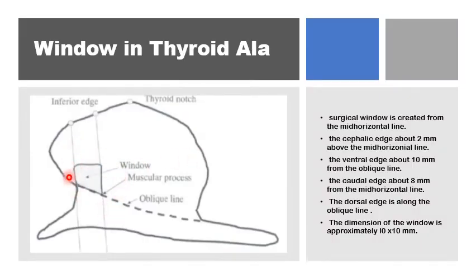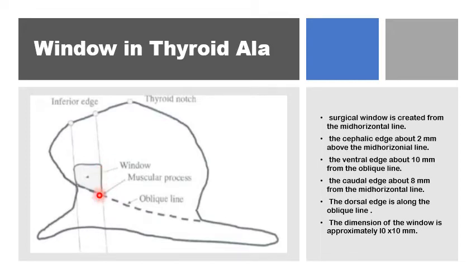To place this tiny window in the thyroid cartilage, the midpoint between the lower part of the thyroid notch and the inferior edge of the thyroid cartilage in the midline is marked, from which a horizontal line is drawn to intersect with the oblique line of the thyroid. The attachment of the strap muscles will be to this oblique line, forming the upper edge of the window. From the oblique line, you go 8 to 10 millimeters ventrally for the anterior edge of the window, then again 8 to 10 millimeters for the caudal end. The base of the window is the oblique line itself. You don't want to go too far posteriorly because the piriform sinus mucosa lies there.